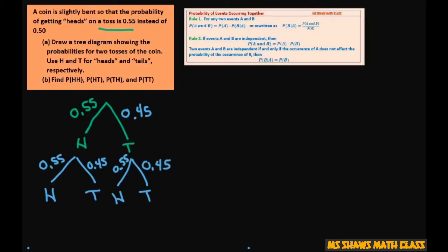And then we can just multiply these out by finding probability of heads heads. Now that one's going to be this branch with this branch. So that's going to be 0.55 times 0.55, and that's going to equal 0.3025.